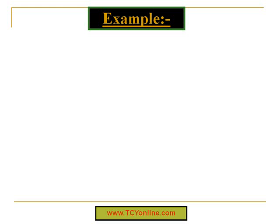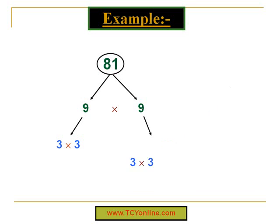Now let's look at one more example. We need to find the prime factors of 81. 81 is a composite number and it can be written as simply 9 times 9. Now both 9s here are composite numbers, so they can be further written as 3 times 3. Now 3 is a prime number, so the prime factors of 81 are 3 × 3 × 3 × 3, which is simply 3 to the power of 4.